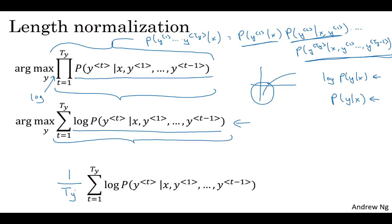Sometimes you use a softer approach where you have Ty to the power of alpha, where maybe alpha is equal to 0.7. So if alpha was equal to one, then you are completely normalizing by length. If alpha was equal to zero, then, well, Ty to the zero would be one, then you're just not normalizing at all. And this is somewhere in between full normalization and no normalization. And alpha is another parameter or hyperparameter of the algorithm that you can tune to try to get the best results.